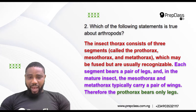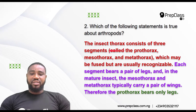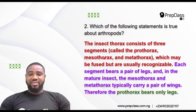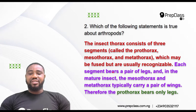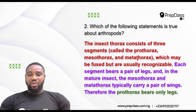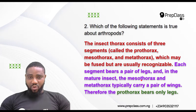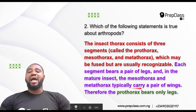Now the insect thorax — I'm using insects as an example of arthropods. The insect thorax consists of three segments called the prothorax, the mesothorax, and the metathorax, which may be fused but are usually recognizable. Each segment bears a pair of legs. That's both the prothorax, the mesothorax, and the metathorax bear a pair of legs. And in the mature insect, the mesothorax — the one at the center — and the metathorax typically carry a pair of wings.